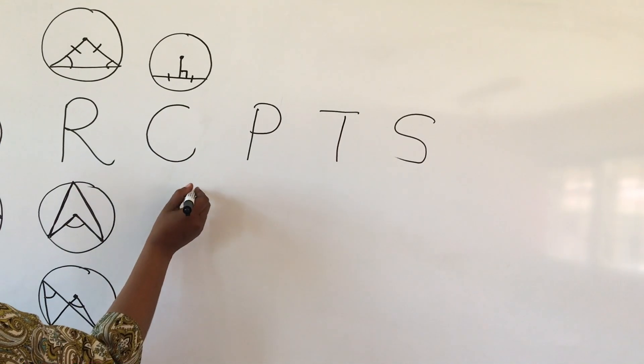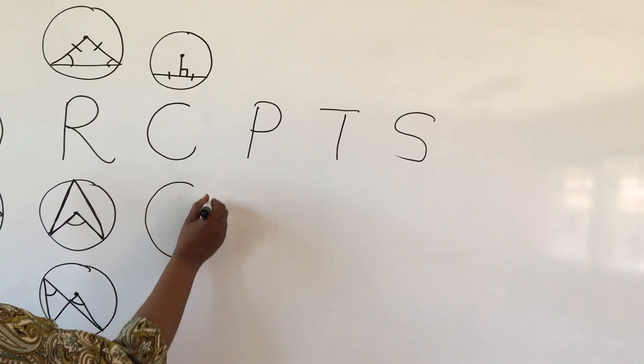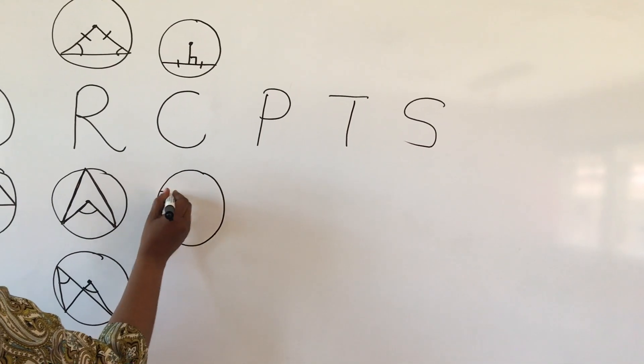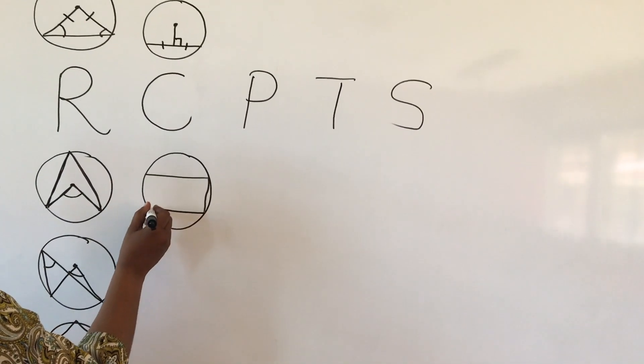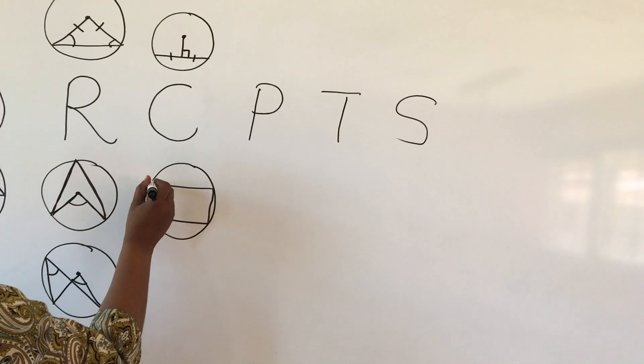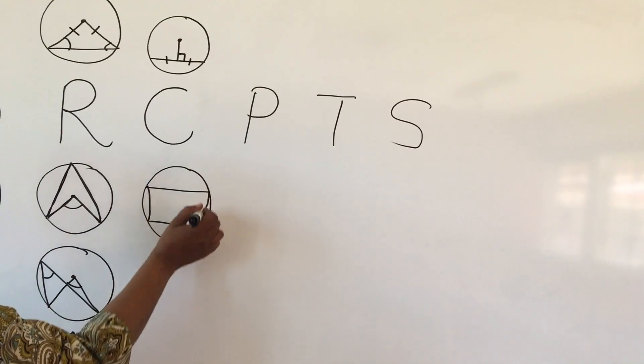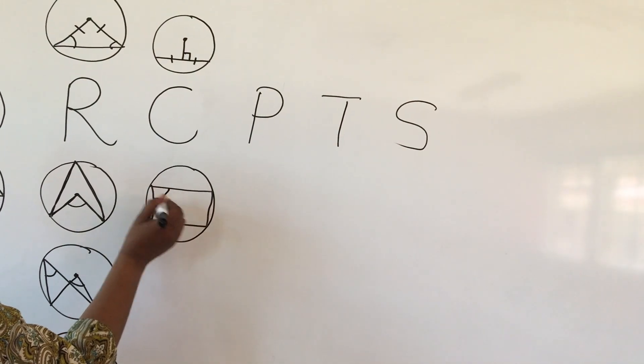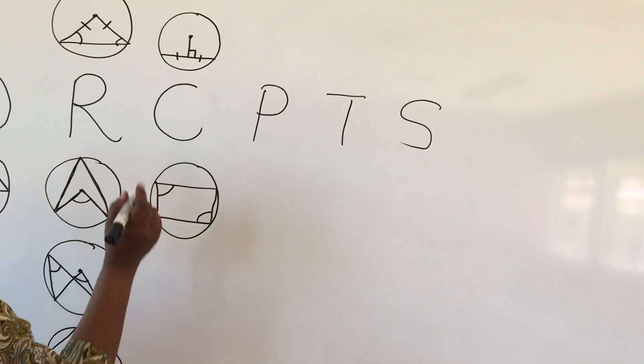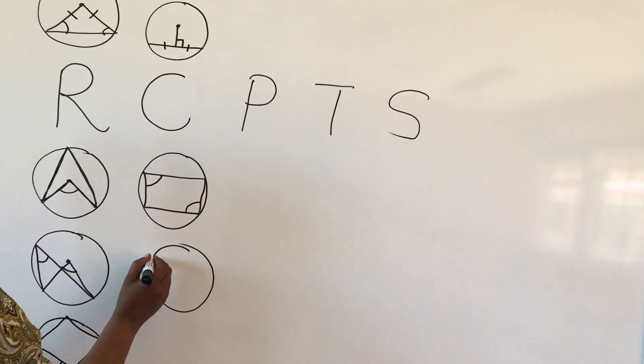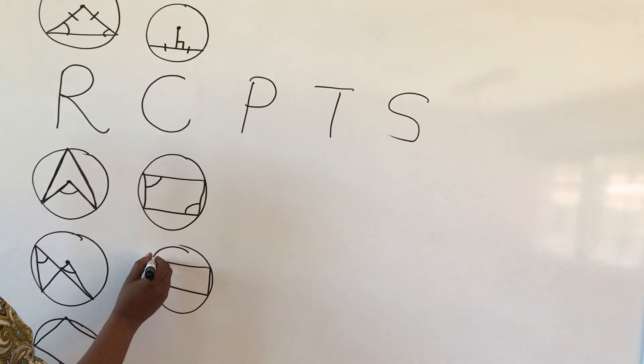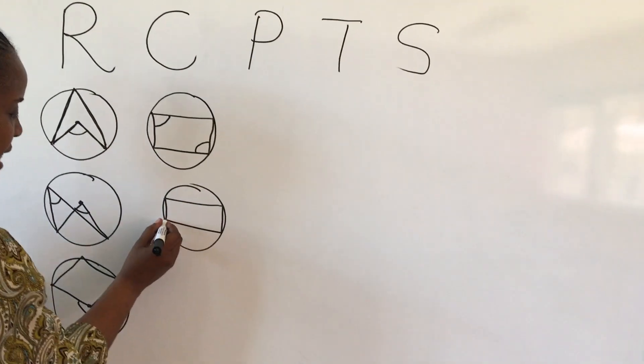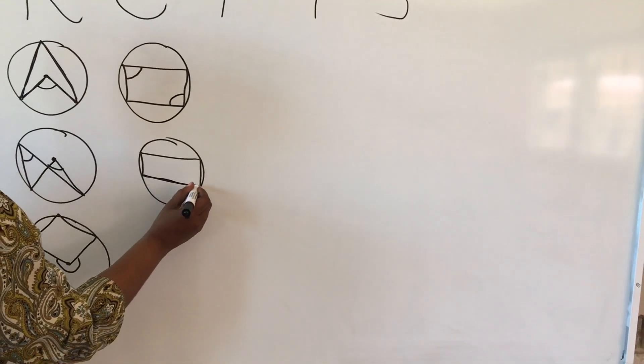Also, the cyclic quad. This is the theorem that they don't tell you that you have a cyclic quad. You look at the shape. All four vertex of the quadrilateral must touch the circumference of the sector. Then the opposite angles are supplementary.